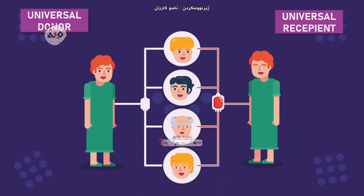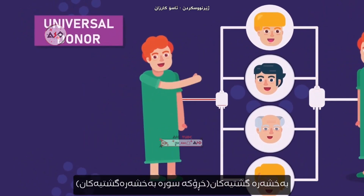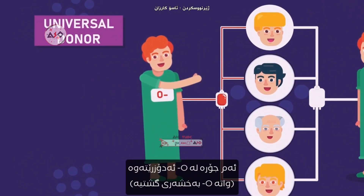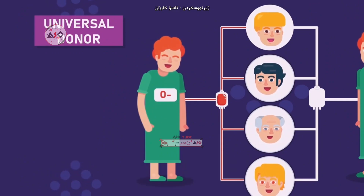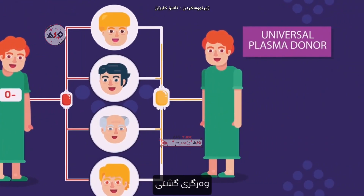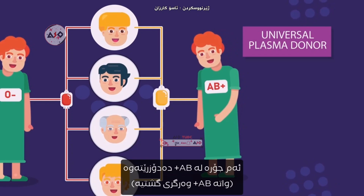Are you a universal donor or a universal recipient? The universal red cell donor has type O negative blood. The universal plasma donor has type AB positive blood.